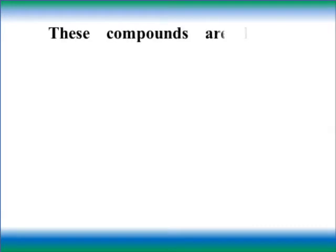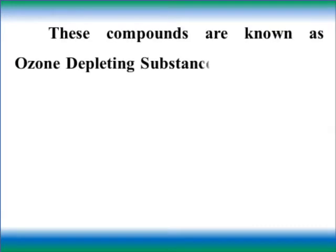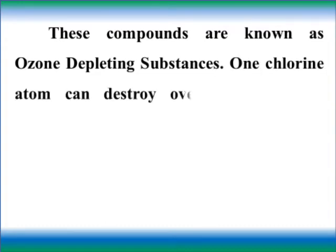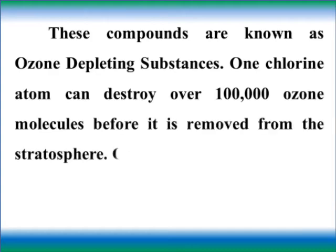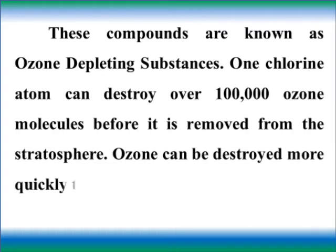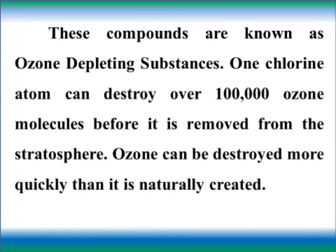These compounds are known as ozone depleting substances. One chlorine atom can destroy over one lakh ozone molecules before it is removed from the atmosphere. Ozone can be destroyed more quickly than it is naturally created.